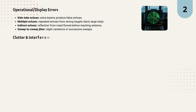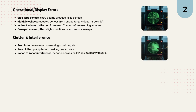Finally, we need to consider clutter and interference. Sea clutter from waves can hide small targets. Rain clutter masks real echoes during precipitation. And radar-to-radar interference shows up as periodic spokes on the display. As you can see, there are many types of errors, but knowing them helps mariners interpret radar correctly and avoid false assumptions.